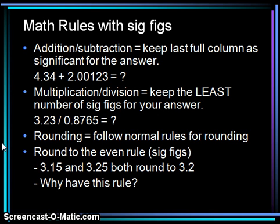Math rules with significant figures. For addition and subtraction, we keep the last full column as significant for the answer. When we calculate 4.34 plus 2.00123, our calculator gives 6.34123. However, both numbers are significant only to the hundredths column — 4.34 is only significant to hundredths — so we round our answer to 6.34.